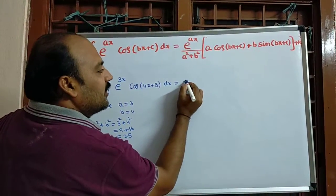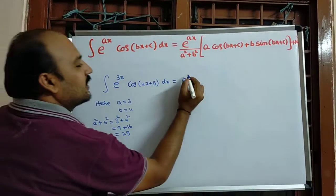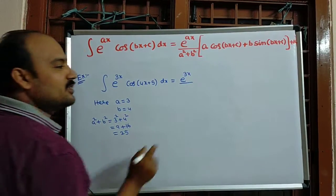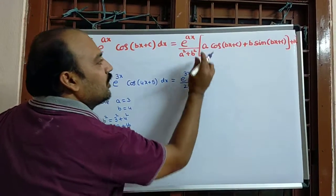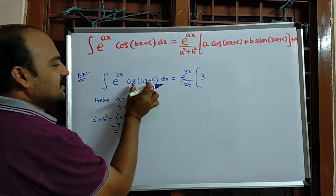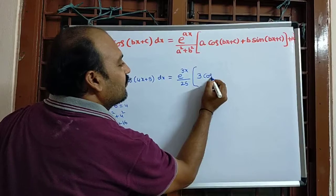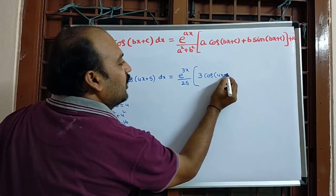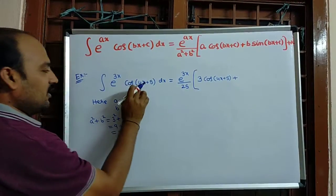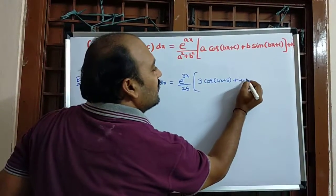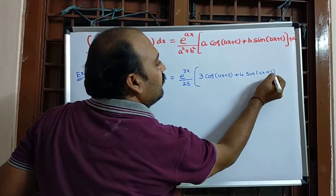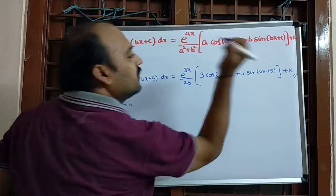Going to the formula: e^(3x) divided by 25, inside the bracket: a value 3 multiplied by cos(4x + 5), plus b value 4 multiplied by sin(4x + 5), plus k.